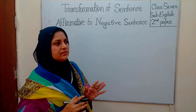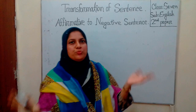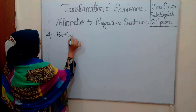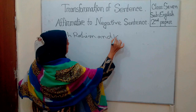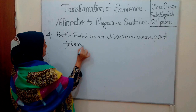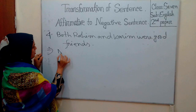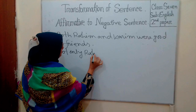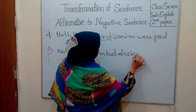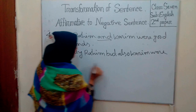Rule 4. If there is 'both...and' in the affirmative sentence, it should be changed into 'not only...but also'. For example: 'Both Rohim and Korim are good friends.' Negative sentence: 'Not only Rohim but also Korim are good friends.'